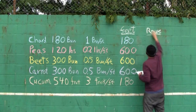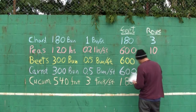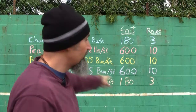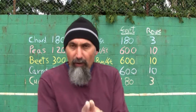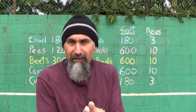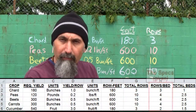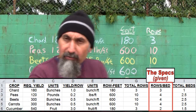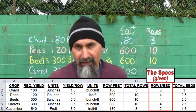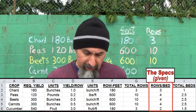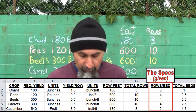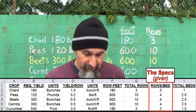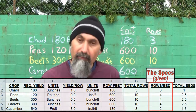The total number of rows works out to: 3 rows of chard, 10 rows of peas, 10 rows of beets, 10 rows of carrots, and 3 rows of cucumbers. To set up our section, we need to know how many rows we can get per bed. Our total bed width is 5 feet, so the specs are: 3 rows of chard per bed, 4 rows of peas per bed, 4 rows of beets per bed, 4 rows of carrots per bed, and 2 rows of cucumbers per bed.